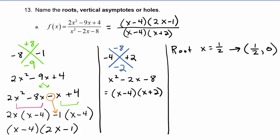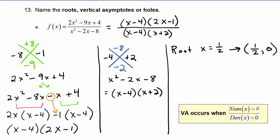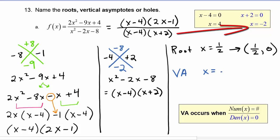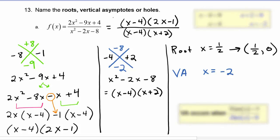Vertical asymptotes occur when the denominator is zero and the numerator is not zero. The vertical asymptote is at x equals negative two. x equals four cannot be a vertical asymptote because even though the denominator is zero there, the numerator is also zero at that same x value.